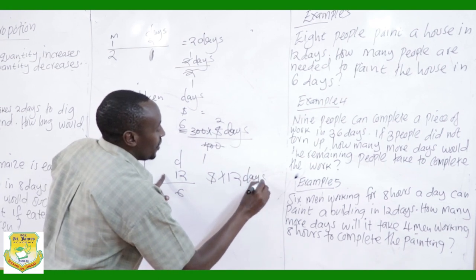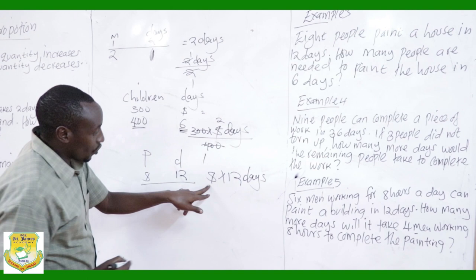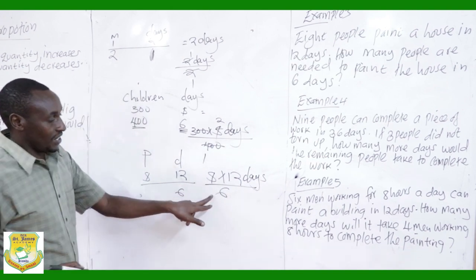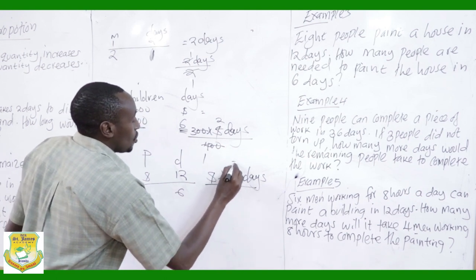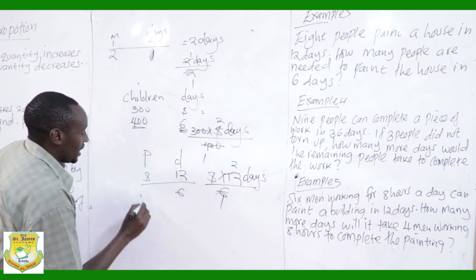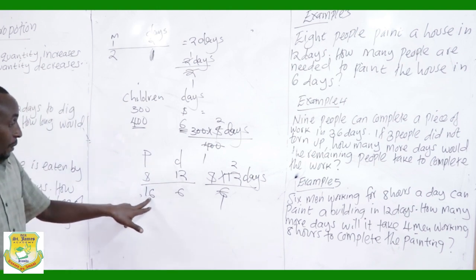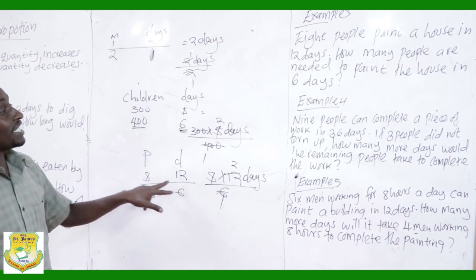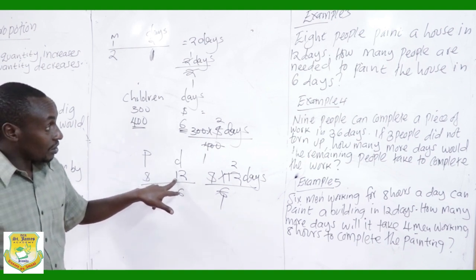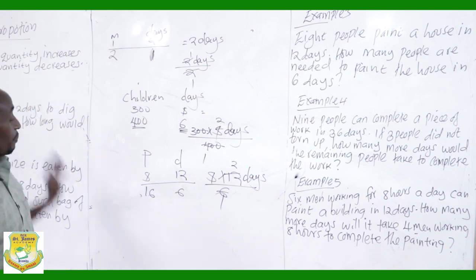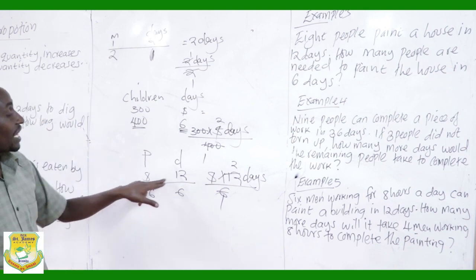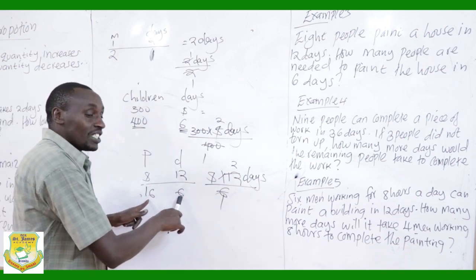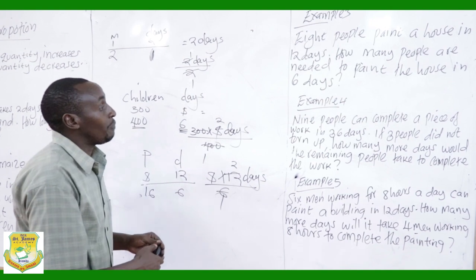One person can take 8 times 12 days. Now they are not alone — there are 6 days required, so we divide the amount of work by 6. We get 16. So 16 people can complete the painting in 6 days. When there were 8 people it took 12 days, showing that when we increase the people, the days decrease.